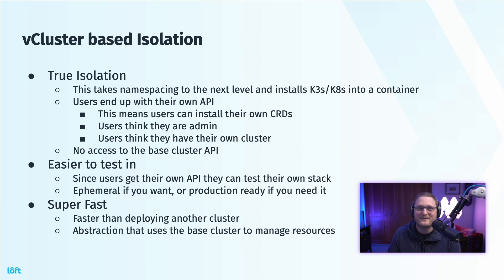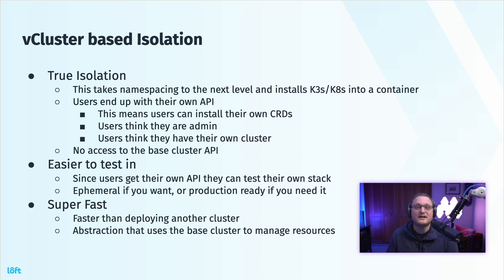Looking at vCluster-based isolation — it's true isolation. This takes namespacing to the next level and installs K3S or K8s into a container. So users end up with their own API. There's a different version of Kubernetes running in a container in their namespace that they're interacting through, and then that information will get synced to the base cluster. That means they can install their own CRDs. Users think that they're administrators. Users think that they have their own cluster. With a little bit of setup and configuration, you can share information about the cluster if you really want to, but there's no access to the base cluster API. It's also easier to test in since users get their own API — they can test their own stack and install whatever they want. Ephemeral if you want, or production ready if you need it.